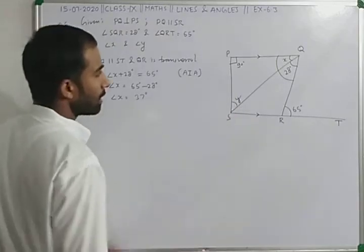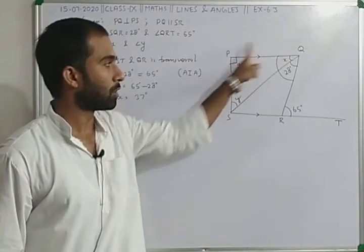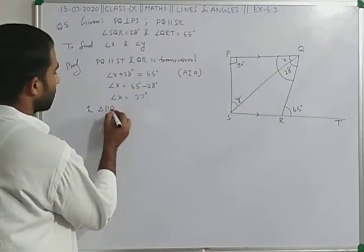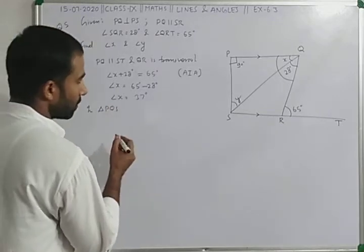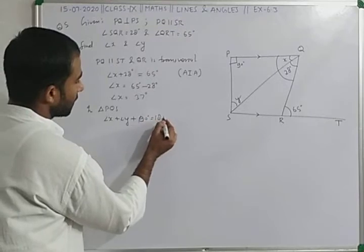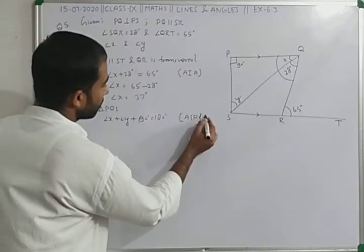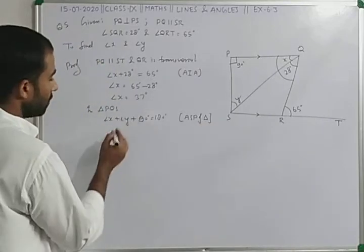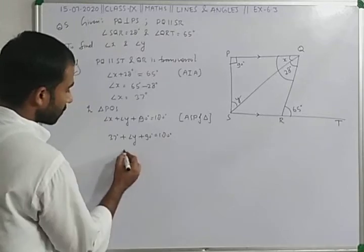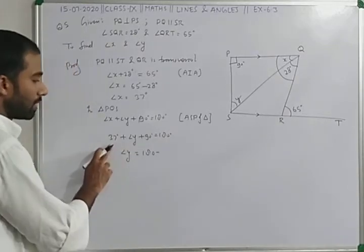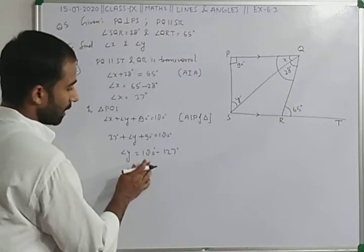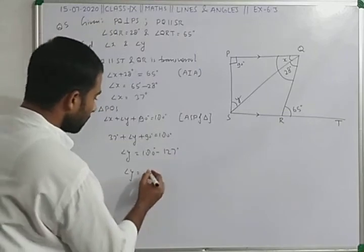Similarly, to find Y: in triangle PQS, angle X plus angle Y plus 90 degrees equals 180 degrees by angle sum property. So 37 plus angle Y plus 90 equals 180. Therefore angle Y equals 180 minus 127 equals 53 degrees.